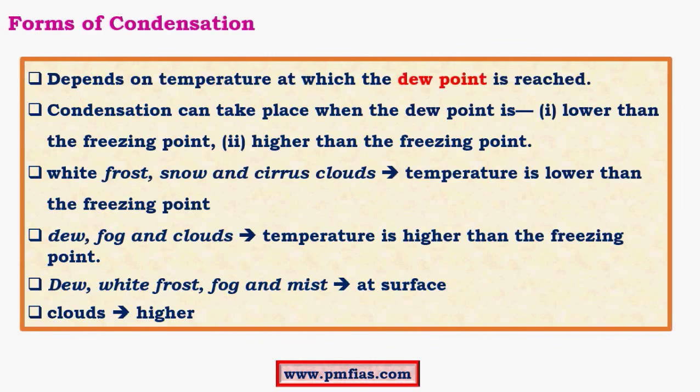Now let us see about forms of condensation. There are usually two types: one where condensation occurs below freezing point and one where condensation occurs above freezing point. This is simply the dew point which is below freezing point and above freezing point. The freezing point of water occurs at 0 degrees Celsius. Above 0 degrees Celsius water is in liquid form and below 0 degrees Celsius it will be in solid form.